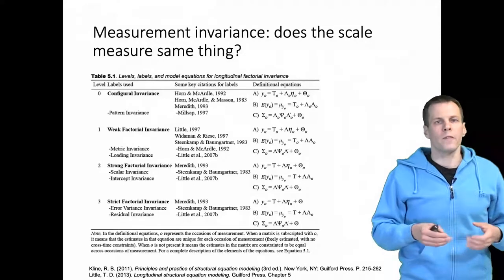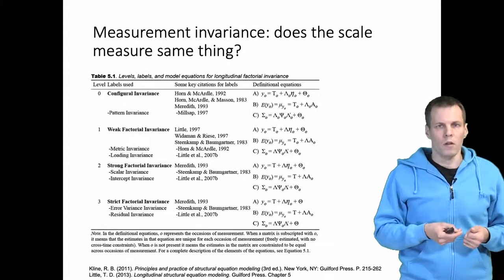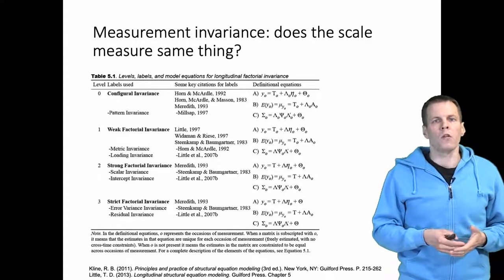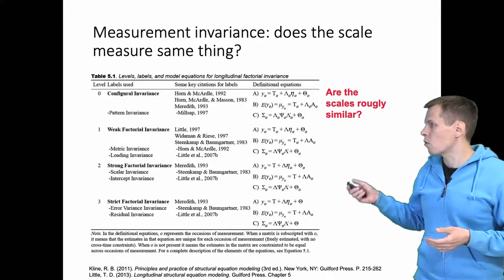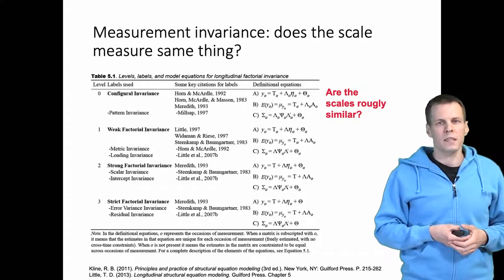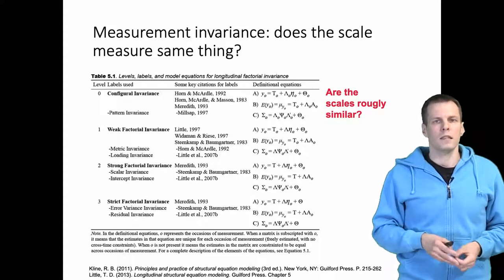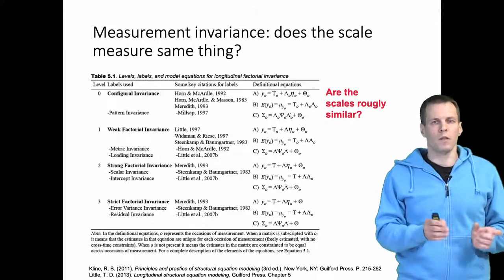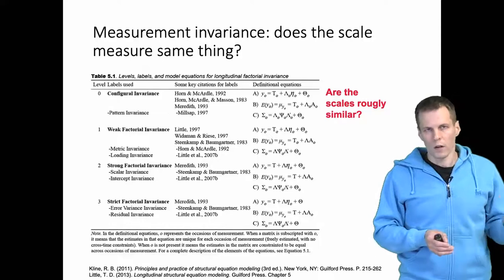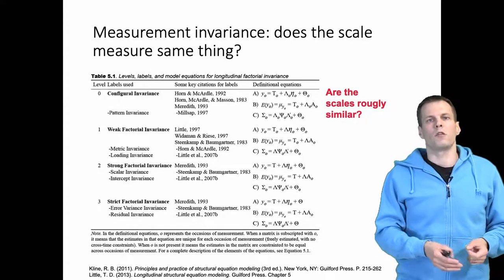Measurement invariance has different levels, and the required level depends on the purpose of the analysis. The first level is configural invariance. This simply means that if we estimate the same factor model in different contexts, does the same model fit well? We don't need correlated errors or cross-loadings in one context but not another.